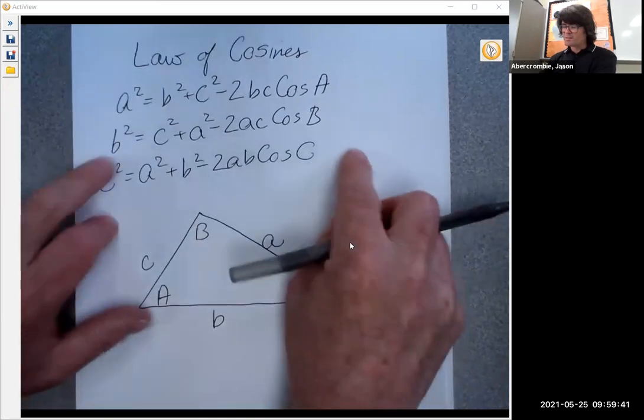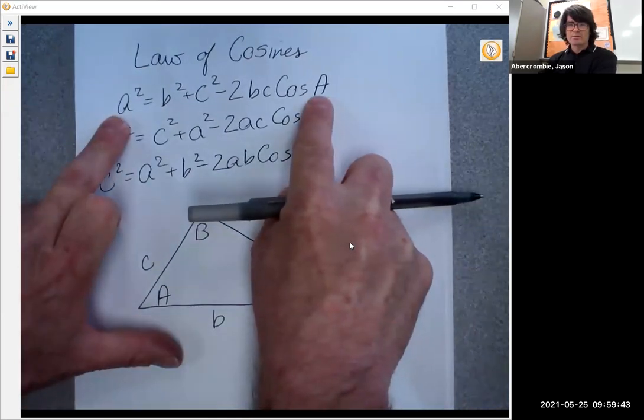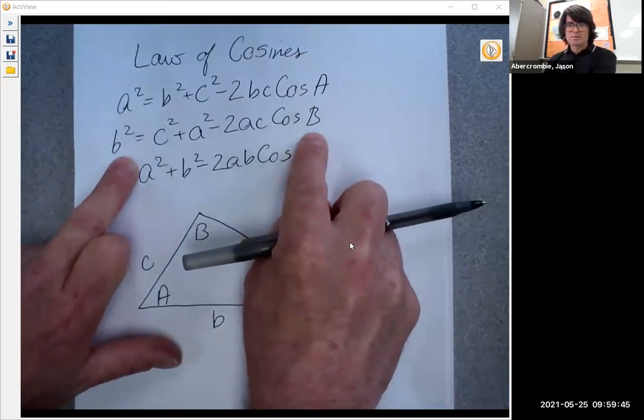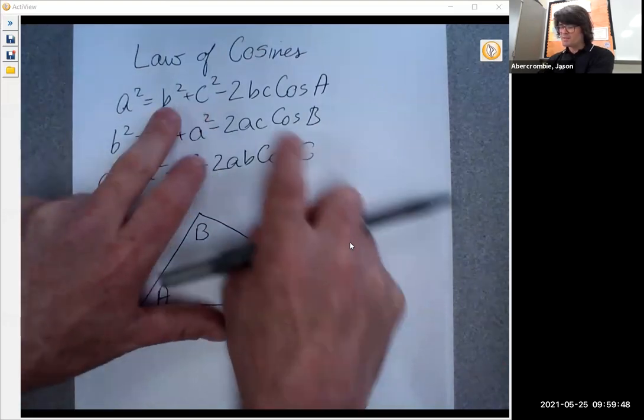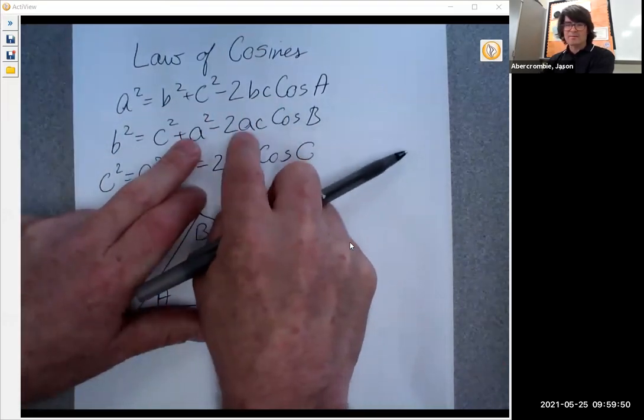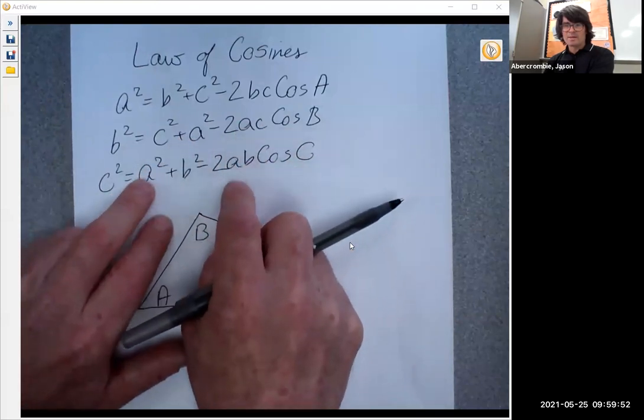The way to remember these formulas is, look, these A's match, or these B's match, or these C's match, and then look, B, C, B, C, C, A, C, A, A, B, A, B.